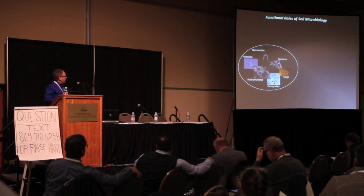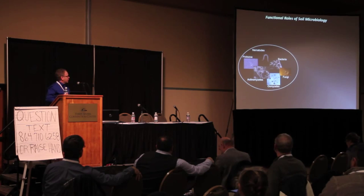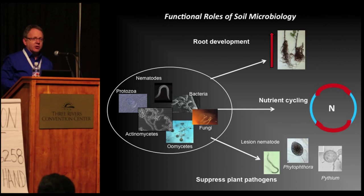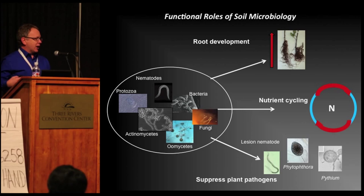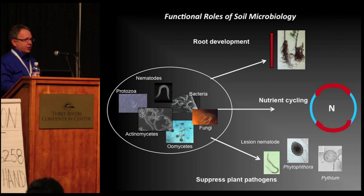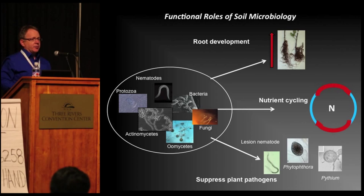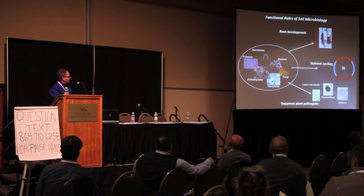We're looking at functional roles of soil microbiology, and certainly we're looking at a very diverse consortium of organisms which associate with plant roots — whether they be protozoa, nematodes, bacteria, fungi, oomycetes, the list goes on. We've looked at three main points regarding how microbes function to interact with plant roots, positively or negatively: root development, nutrient cycling, and how we might manage the microbiota to limit pathogen activity. Today I'm going to focus on root development and disease suppression.